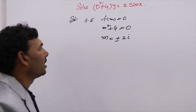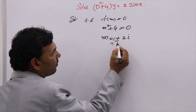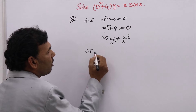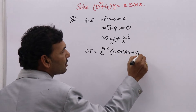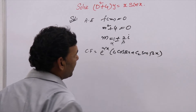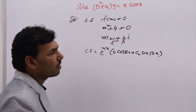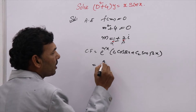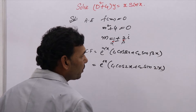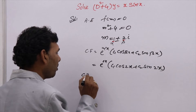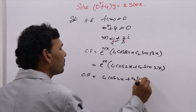To write the complementary function, the formula is e^(αx)·[c₁·cos(βx) + c₂·sin(βx)]. Here alpha is 0 and beta is 2. So we write e^(0x)·[c₁·cos(2x) + c₂·sin(2x)]. Since e^(0) = 1, the complementary function is CF = c₁·cos(2x) + c₂·sin(2x).